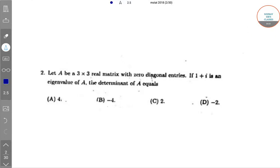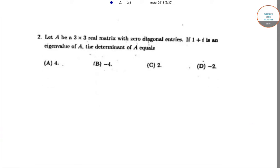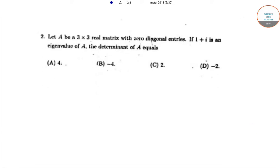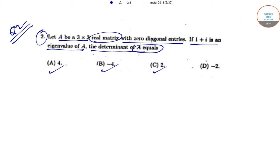Hello students, welcome to Solvethis Classes. Today we'll be solving question number 2 from the ISI M-Stat question paper of 2018. The question states: Let A be a 3×3 real matrix with zero diagonal entries. If 1+i is an eigenvalue of A, then the determinant of A equals: (A) 4, (B) -4, (C) 2, (D) -2.